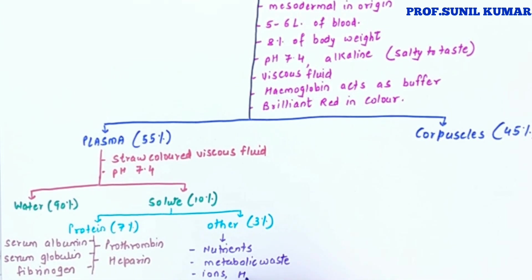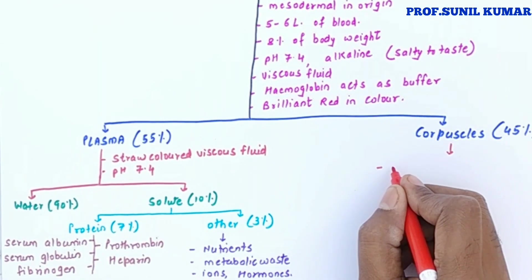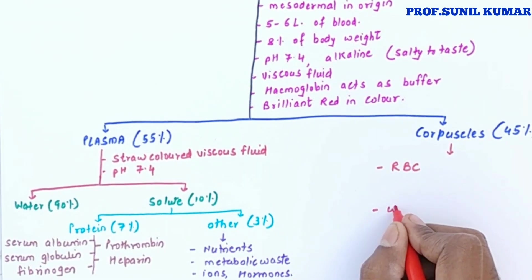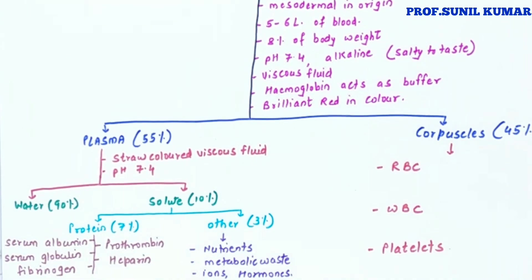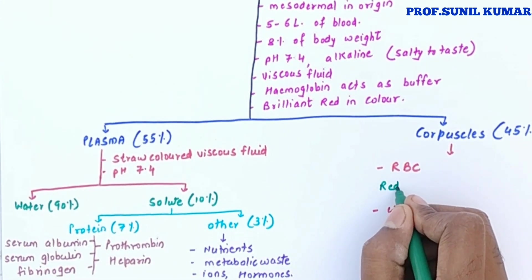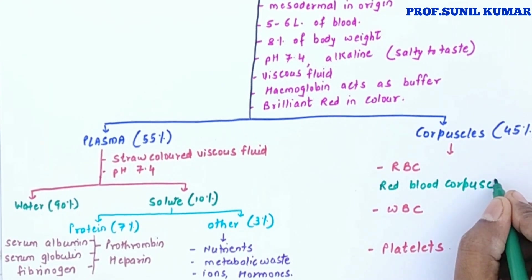Other substances found in the solute include nutrients like glucose and amino acids, metabolic waste like lactic acid, ions, hormones, and nitrogenous waste. When we talk about corpuscles, there are three major types: RBC (red blood corpuscles), WBC (white blood corpuscles), and platelets.